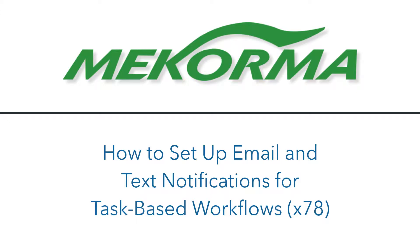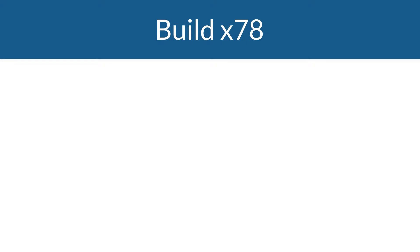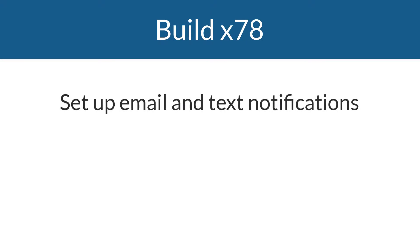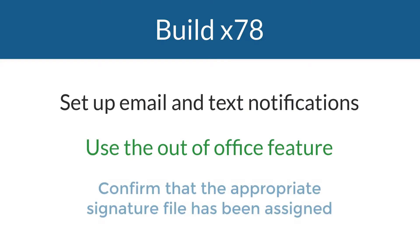The process I'll show you is specific to users within any company using our task-based security option. In McCorma Build 78 and later, users have the capability to set up email and text notifications for optimal workflow, use the out-of-office feature to delegate approval or authorization tasks to other GP users, ensure the delegate has been assigned equivalent security roles by an administrator, and confirm that the appropriate signature file has been assigned to their user profile by an administrator.